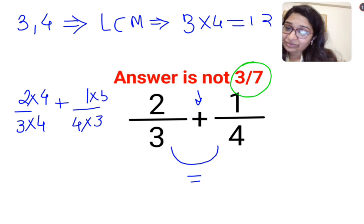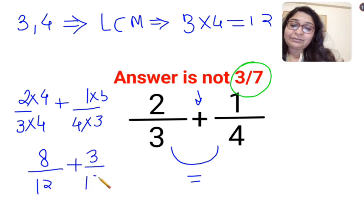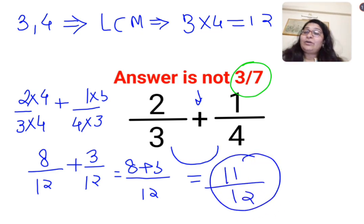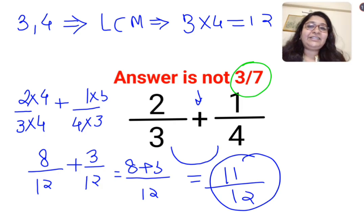So 2 multiplied by 4 is 8 divided by 12, plus 3 divided by 12. So the answer for this question is supposed to be 11 upon 12. I hope this is very clear to everyone. That's it for today. I will see you in the next video.